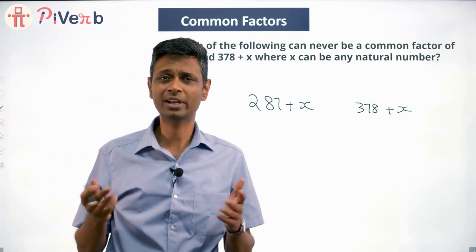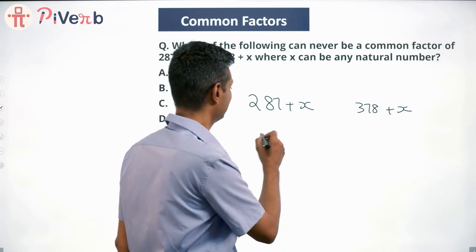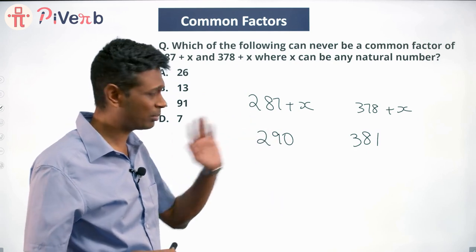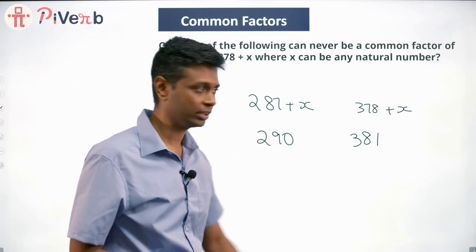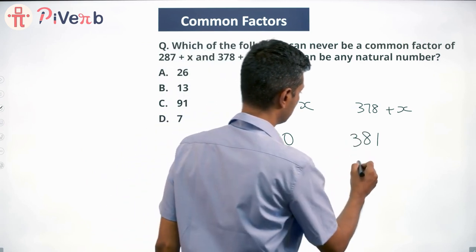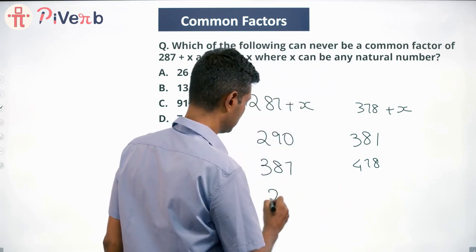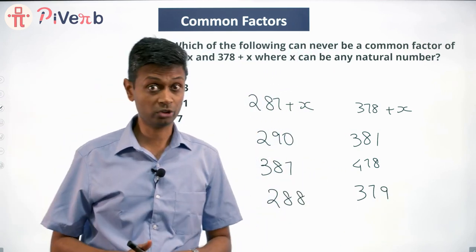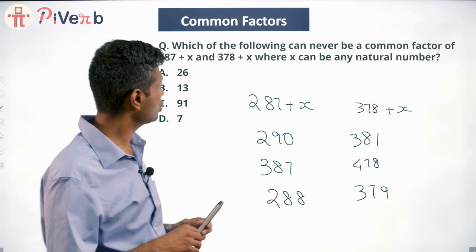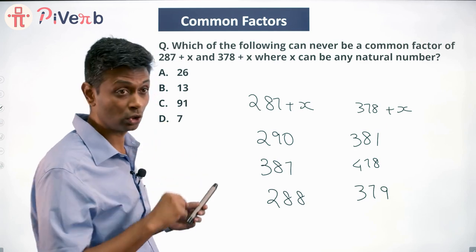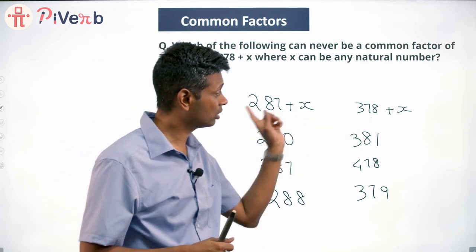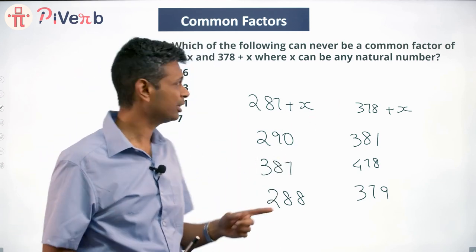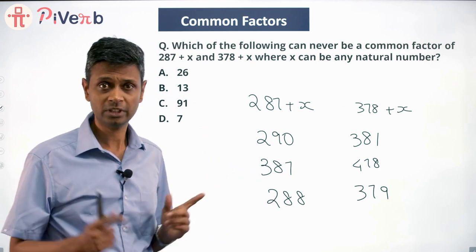I'm going to start by putting some value of x to get some flow going. So 287 + 3 = 290, and 378 + 3 = 381. We could have x = 100, giving 387 and 478; or x = 1, giving 288 and 379. Any of these values — millions of others are possible. He's saying x can be any natural number. Which of the following can never be a common factor? Both of these cannot be a multiple of 26, or 30, or 91, or 7?